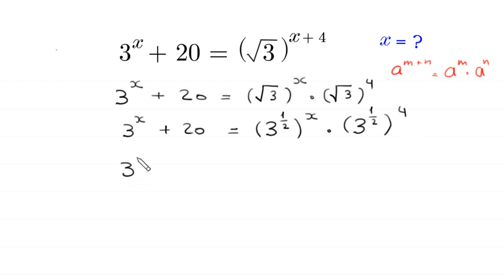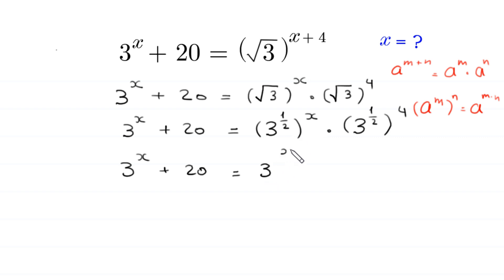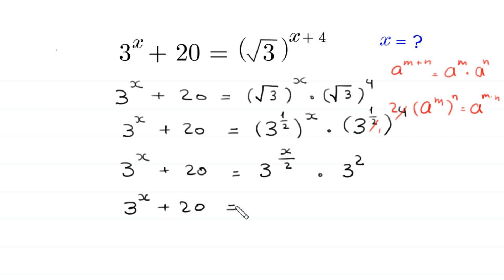Next, 3 to the power x plus 20 is equal to, and by using the power rule a to the power m, whole to the power n equals a to the power m times n. So 3 to the power 1 over 2, whole to the power x becomes 3 to the power x over 2. And here we are left with 3 squared. So 3 to the power x plus 20 equals 3 to the power x over 2 times 9.